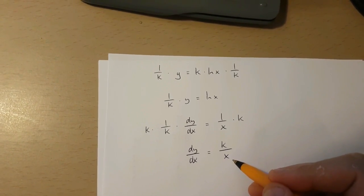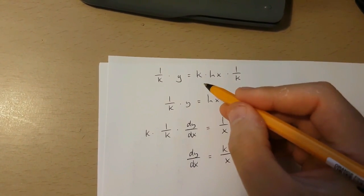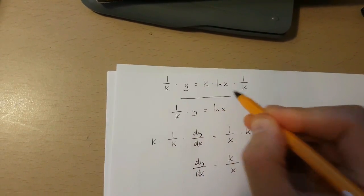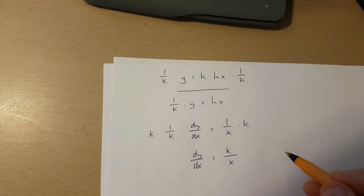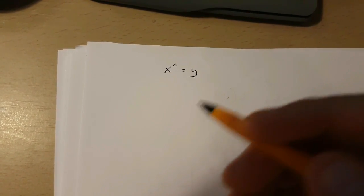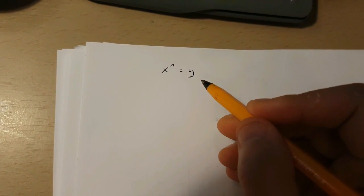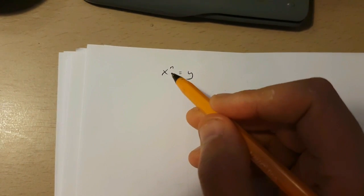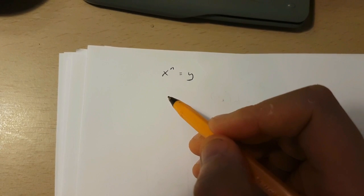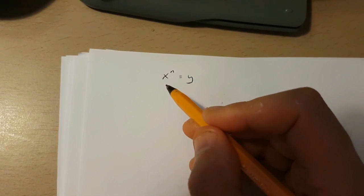And this is y equals k times ln x differentiated. Now using what we've discovered, we can now differentiate y equals x to the power of n using implicit differentiation. Now first of all,